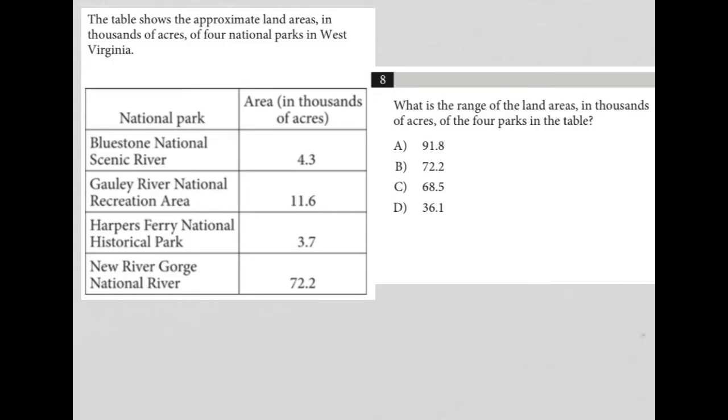This question starts off by providing some information for us. We're told that the table shows the approximate land areas in thousands of acres of four national parks in West Virginia. We're given those four different parks here, along with the area of each park in thousands of acres.